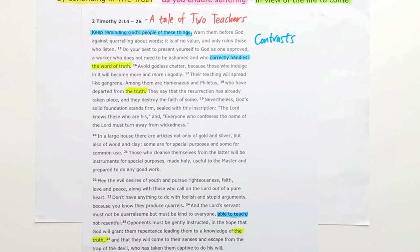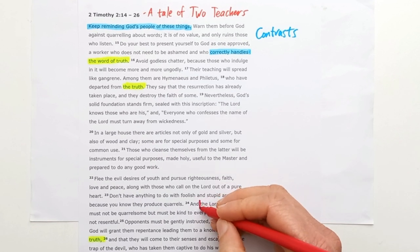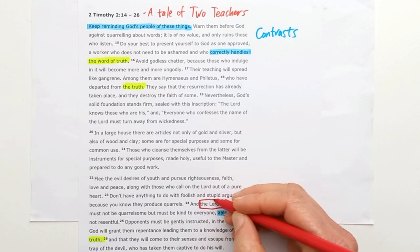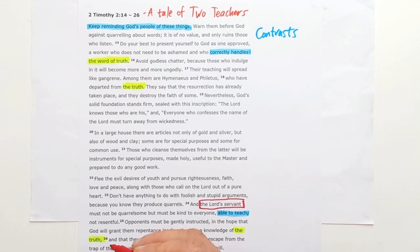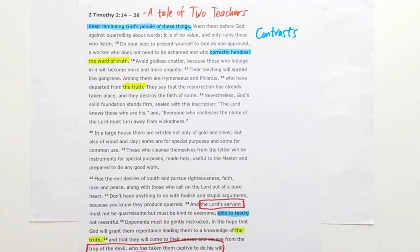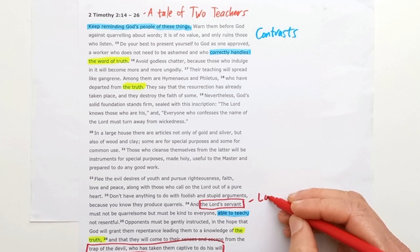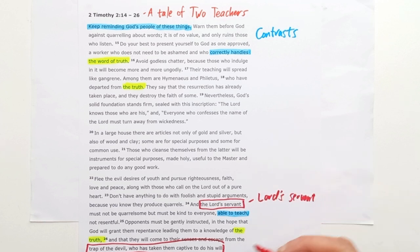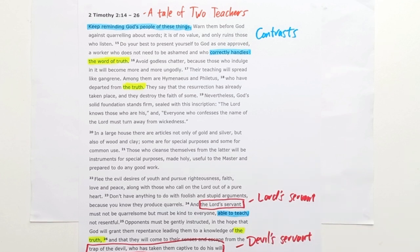To see the two key characters in this section, we can look right at the end of the passage where Paul speaks about the Lord's servant and then the person who has been trapped by the devil to do his will. So we've got the Lord's servant and the devil's servant — and it's quite a striking way to talk about these false teachers. They aren't merely teaching false truth; they're actually doing the devil's will.